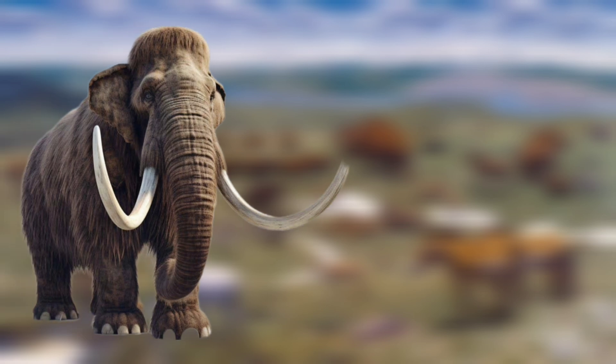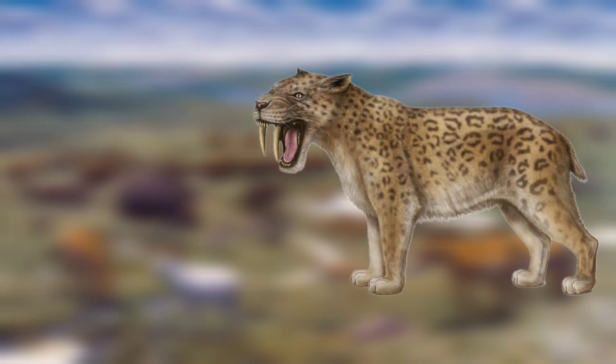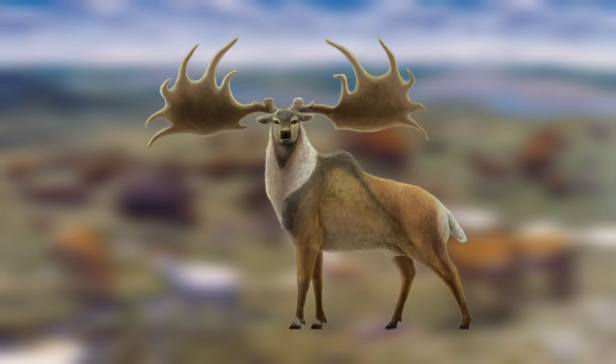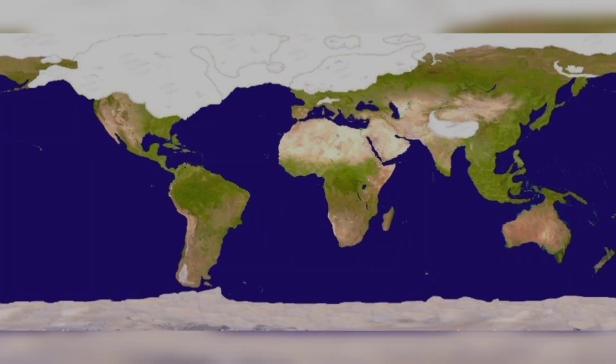The fauna of the Mammoth Steppe included some of the most iconic animals of the Pleistocene. Woolly mammoths were among the largest, reaching up to eight metric tons and standing over three meters tall at the shoulder, with thick shaggy coats and long curved tusks. Saber-toothed cats such as Smilodon were apex predators with elongated upper canine teeth. The steppe was also home to mastodons, bison, wild horses, and the giant deer, known for their enormous antlers spanning up to 3.6 meters.